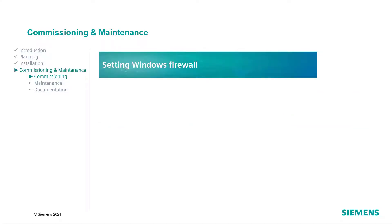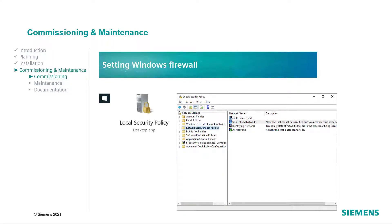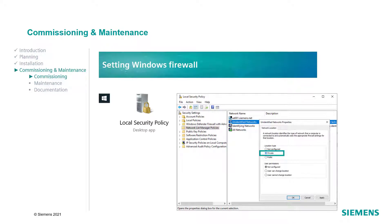For the commissioning of the Cerberos Fit FC360, further aspects have to be taken into account. As a start, the firewall settings need to be adapted if you would like to update the panel with your computer. For this, make sure to have admin rights on your PC. The first step is to search for the Local Security Policy on the Windows Start screen. Go to the Network List Manager Policies and click on Unidentified Networks. Then open the Properties with a right-click and check if the Location Type is set to Private. Go on with the Identifying Networks and make sure that the Location Type in the Properties is also set to Private.